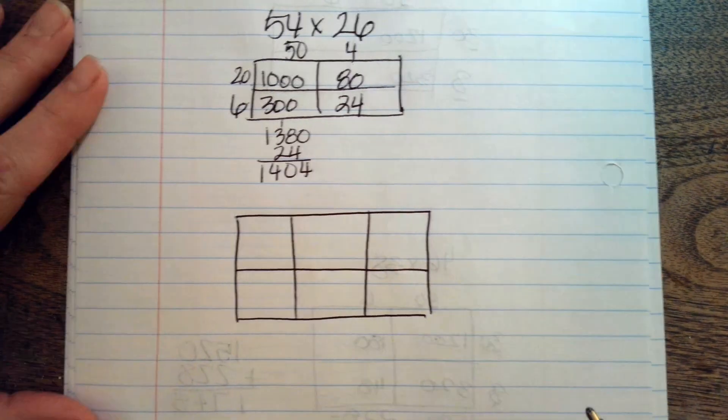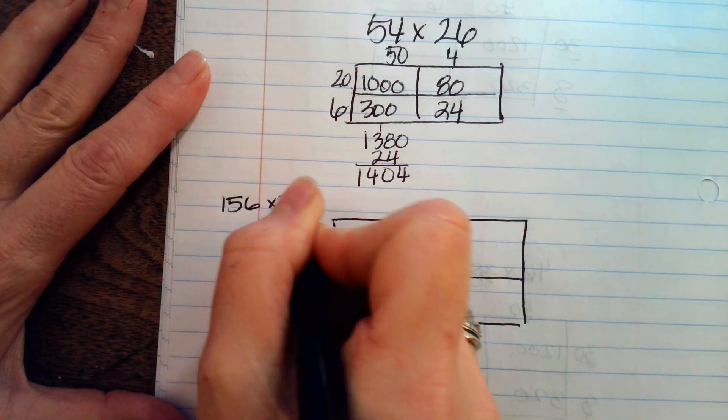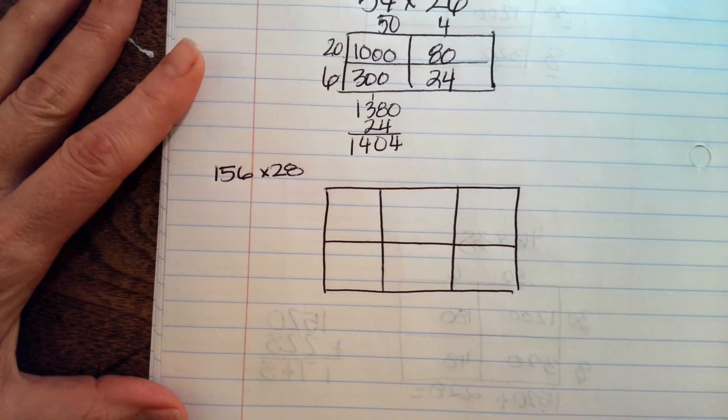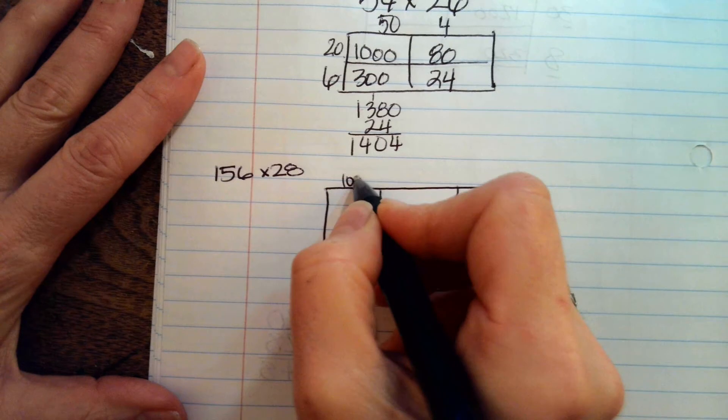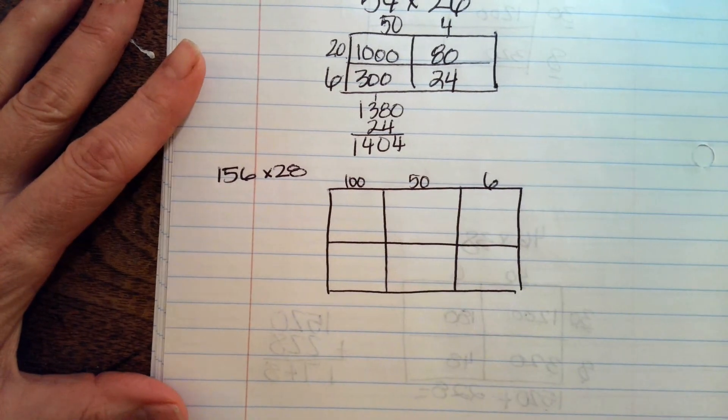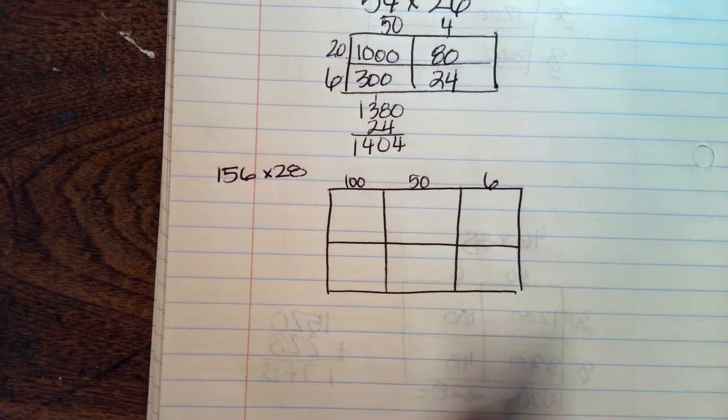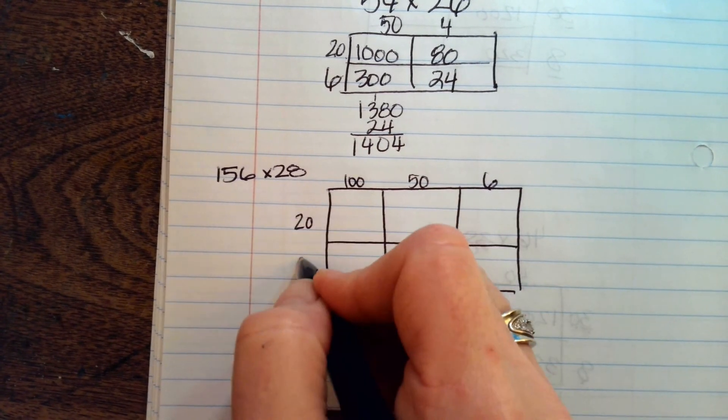So if we did 156 times 28, we're going to do 100 here and then 50 and then 6. Does that make sense to you why I did that? Yeah. All right. And then 20 and then 8.